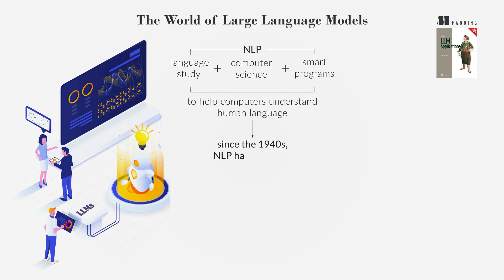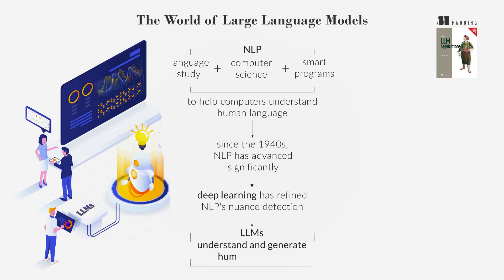Since the 1940s, NLP has advanced significantly, but capturing language nuances was challenging until deep learning emerged. This led to large language models, LLMs, which understand and generate human-like text, transforming technology interactions.